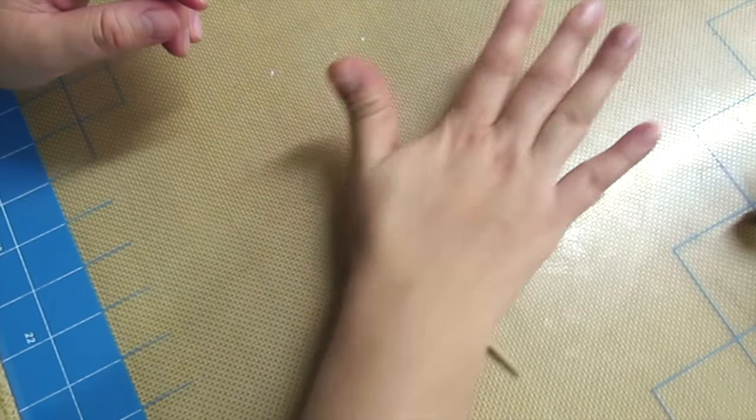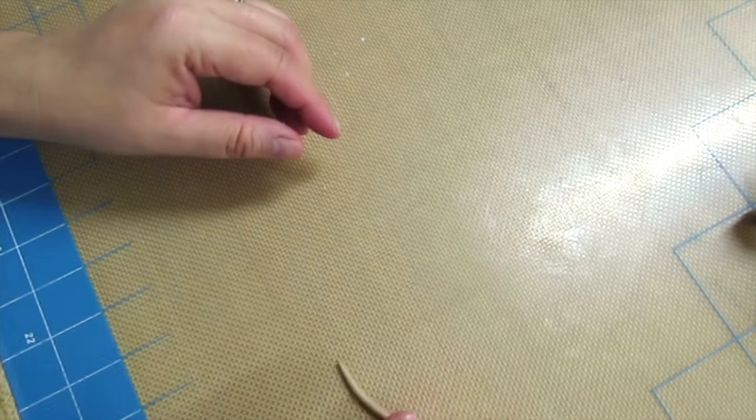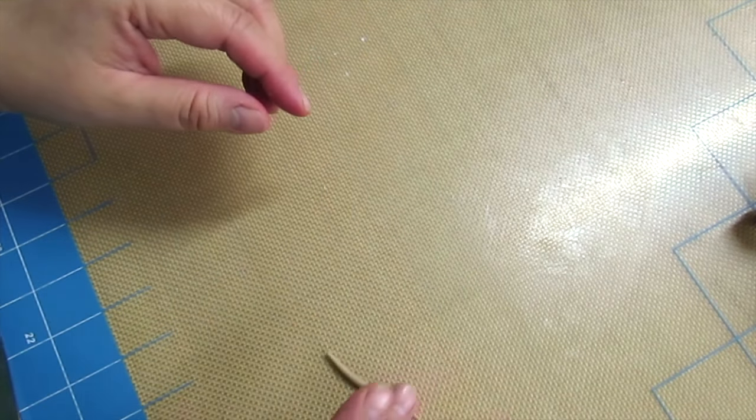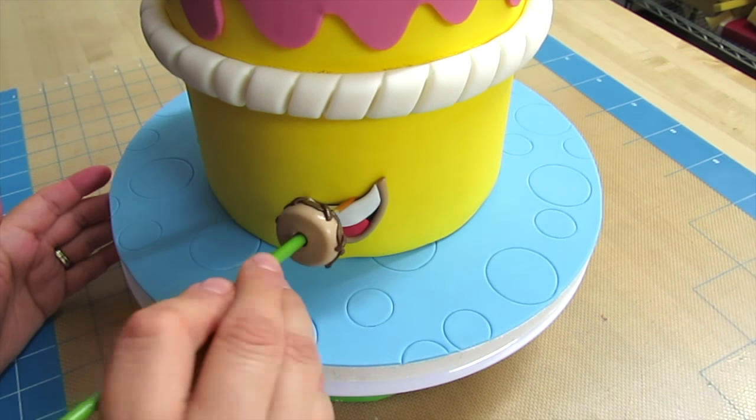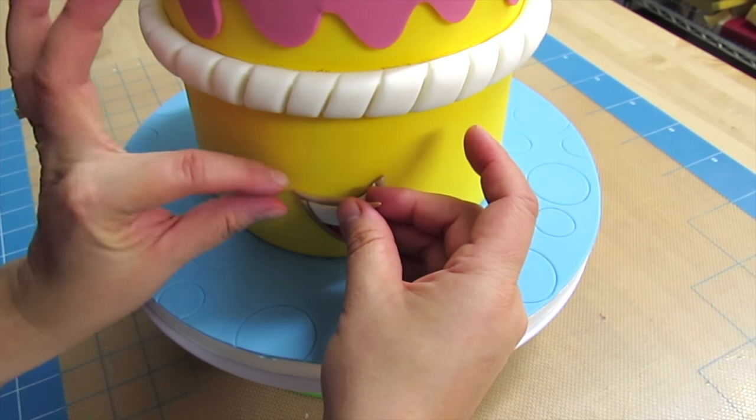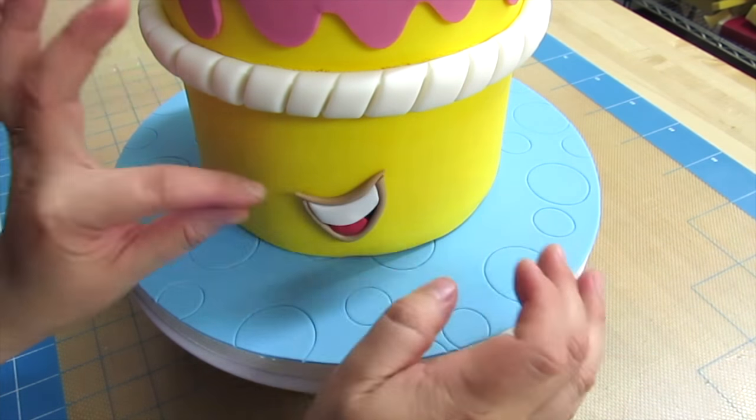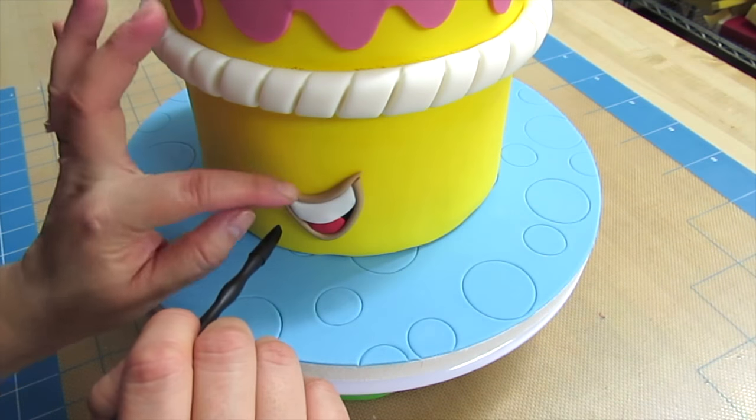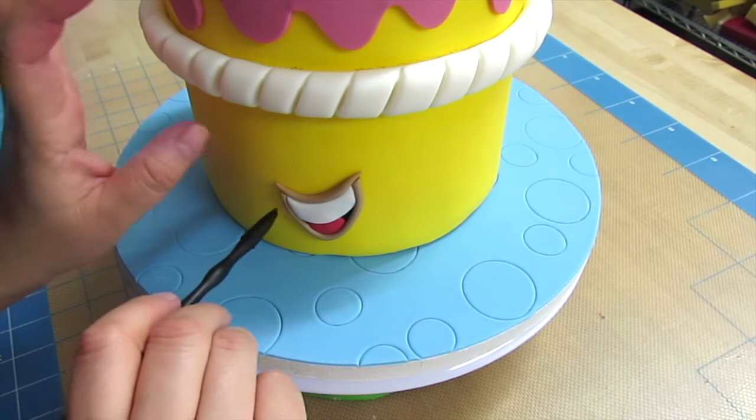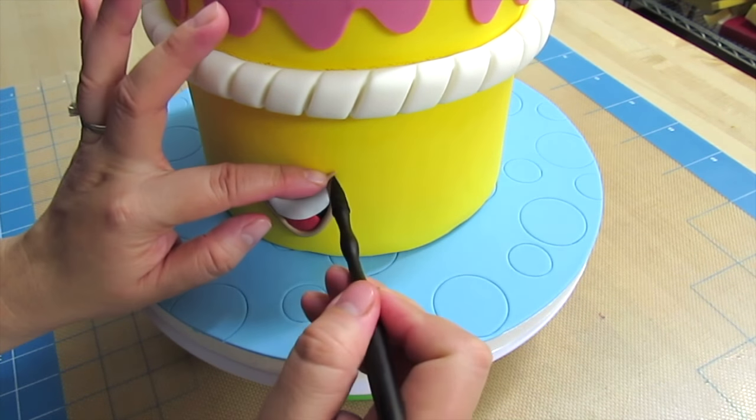Now I'm just carefully placing her lip all around the bottom of her mouth, making sure it's nice and flush. Use your straight blade to trim off any excess. We're going to do the same thing for the upper lip, but this one's going to be a lot shorter. Go ahead and measure how much you need and then make sure that both ends are nice and pointy.